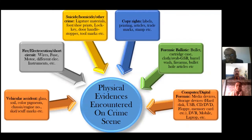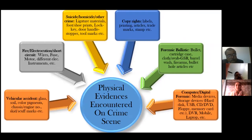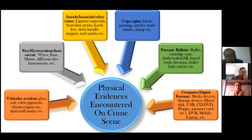Physical evidences we'll be talking about today are most importantly impression evidences, as well as evidences encountered in specific cases like burglary, hit and run, forgery of marks, or stem particles, and in cases of arson where we examine fires. Starting from vehicular accidents or hit and run cases, we can come across evidences like glass, soil samples, color pigments, engine or chassis numbers, and skid marks — the most important marks to determine the speed of the vehicle at the time of collision.